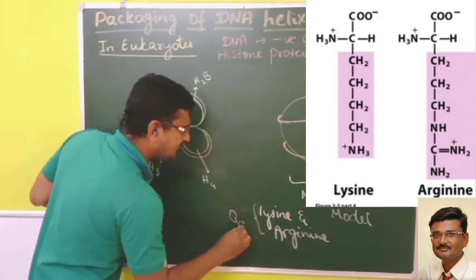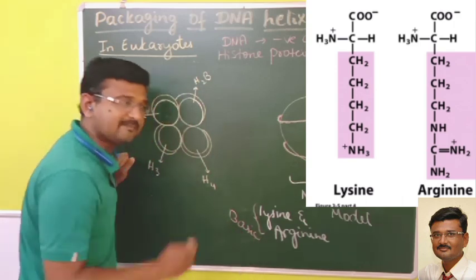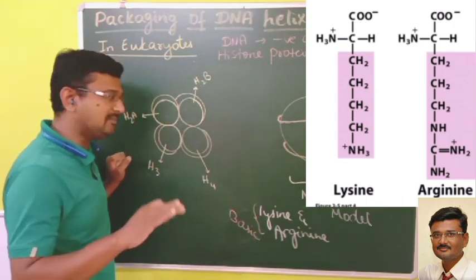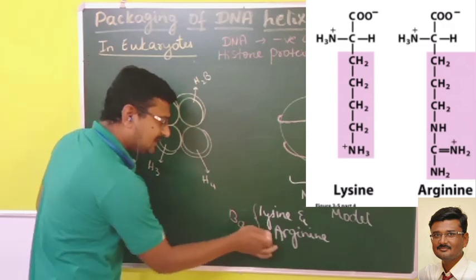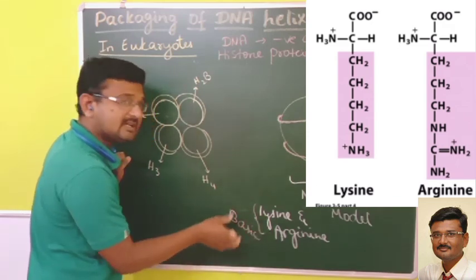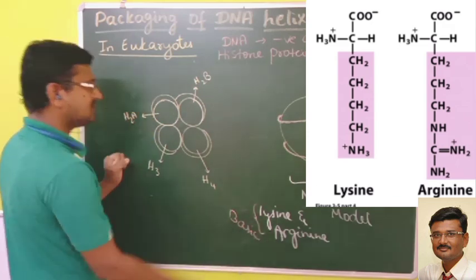Both lysine and arginine are basic amino acids in nature. Among the 20 amino acids, there are acidic, neutral, and basic amino acids. These basic amino acids are positively charged, which is why the histone proteins are positively charged.